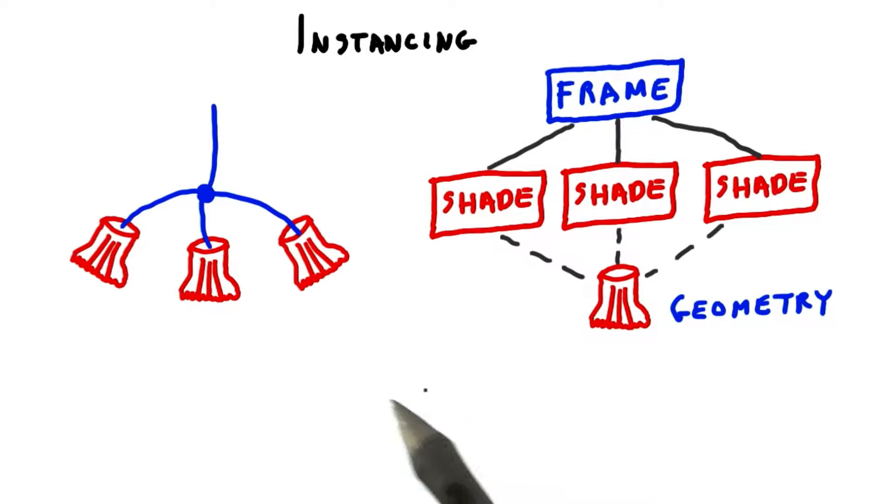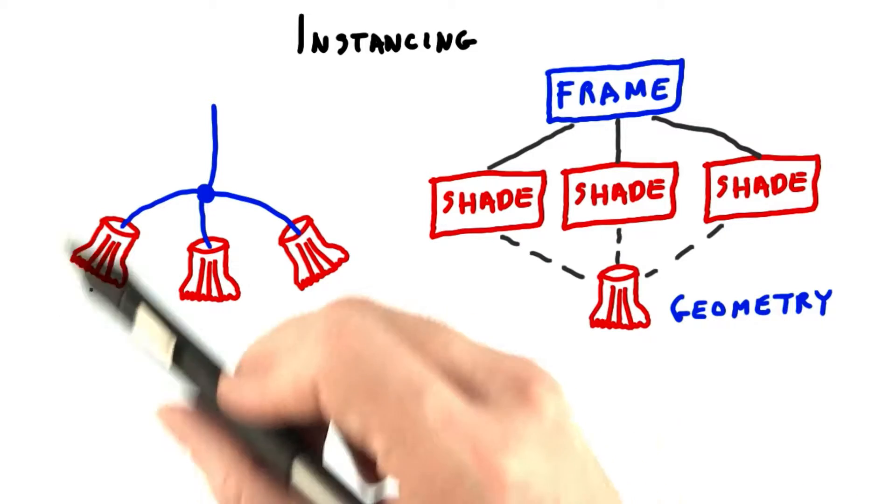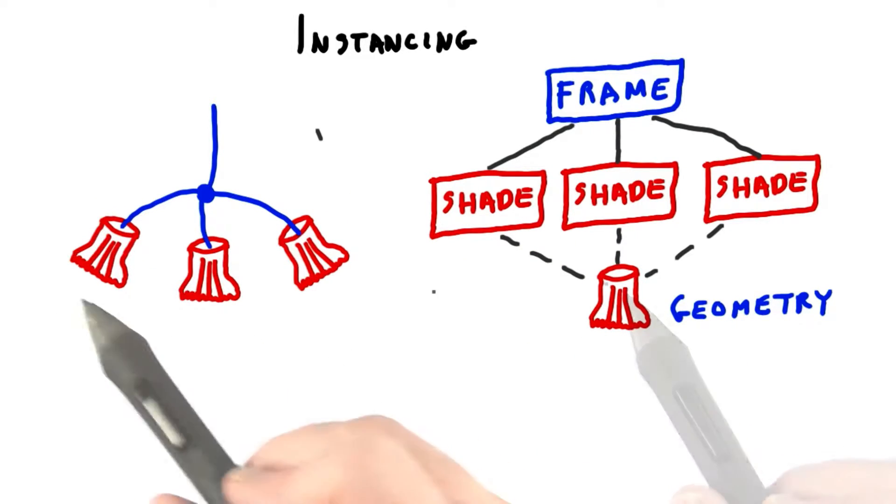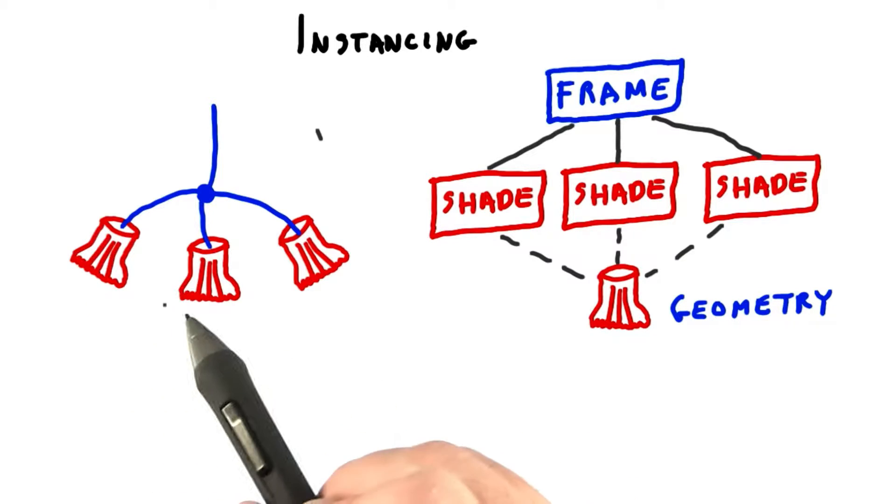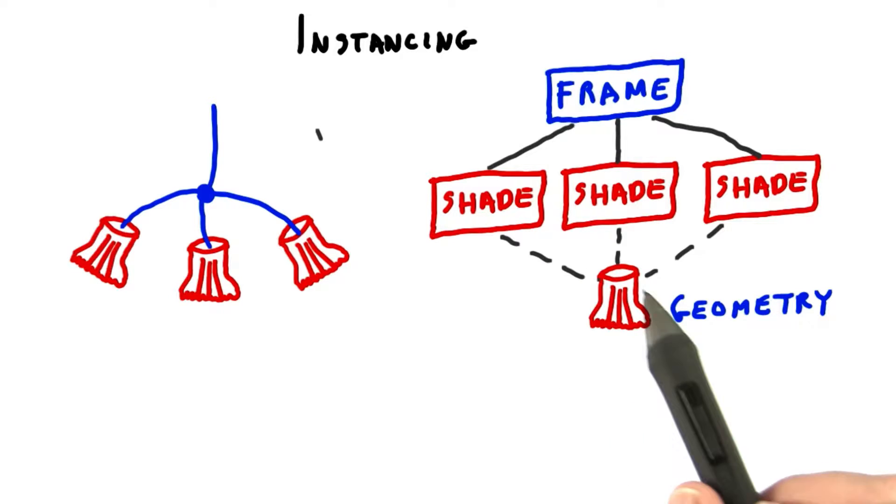Instancing is the idea that a single geometric set of triangles can be reused again and again. For example, for a lamp, you might have a single piece of geometry for a bulb fixture. If you want three bulb fixtures, you then set up three different transforms for where the objects go, but reuse the same set of triangles for each one.